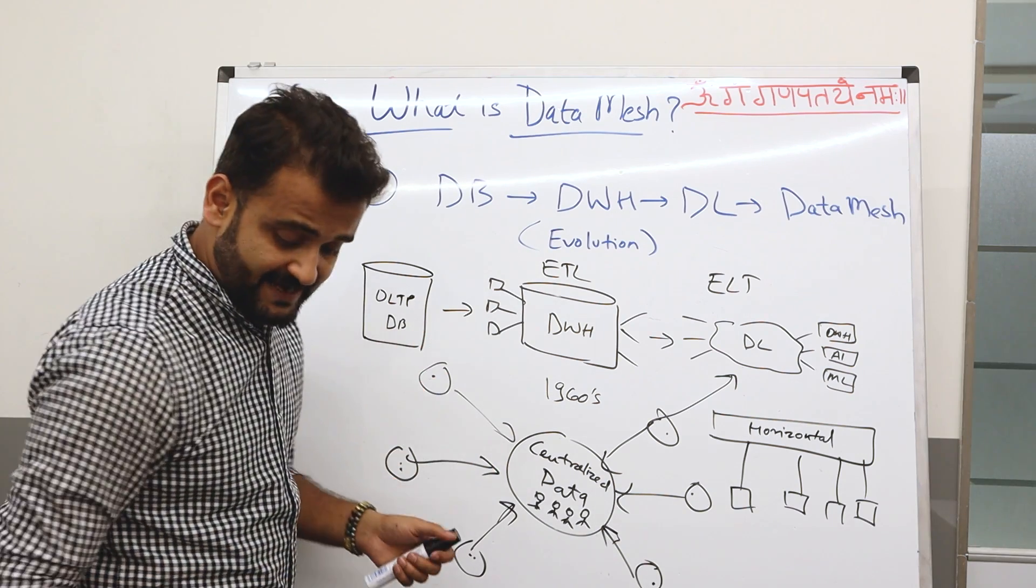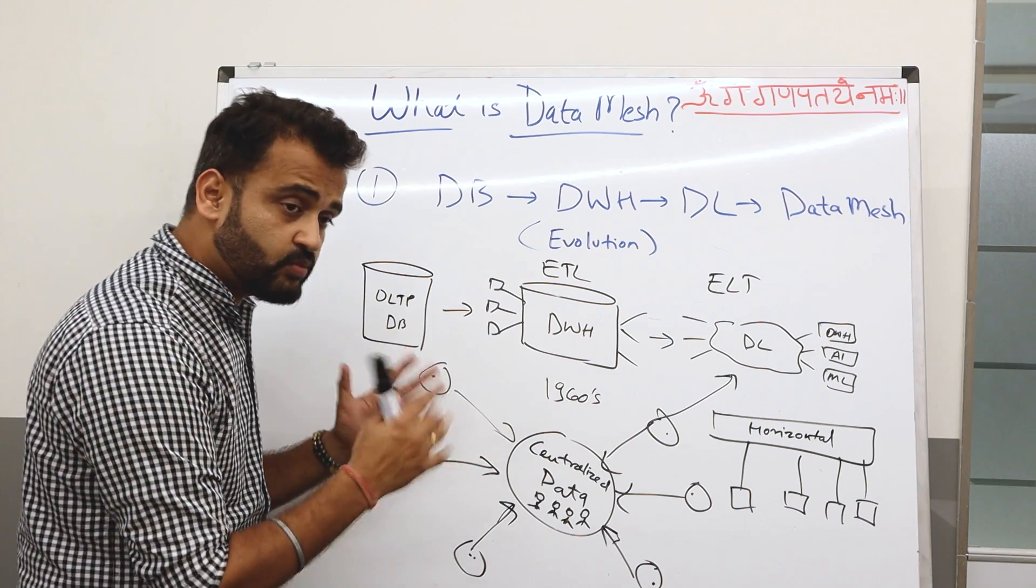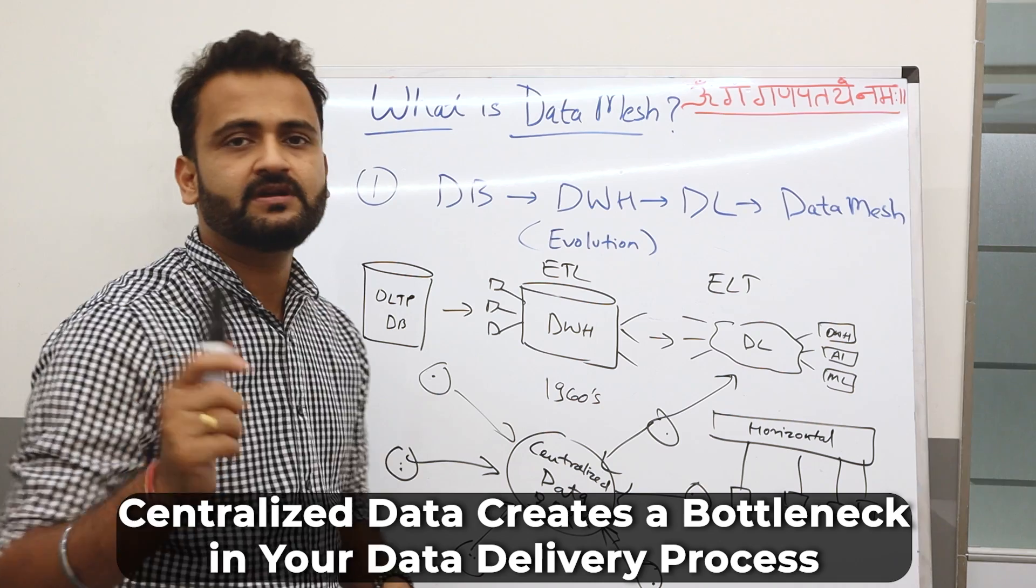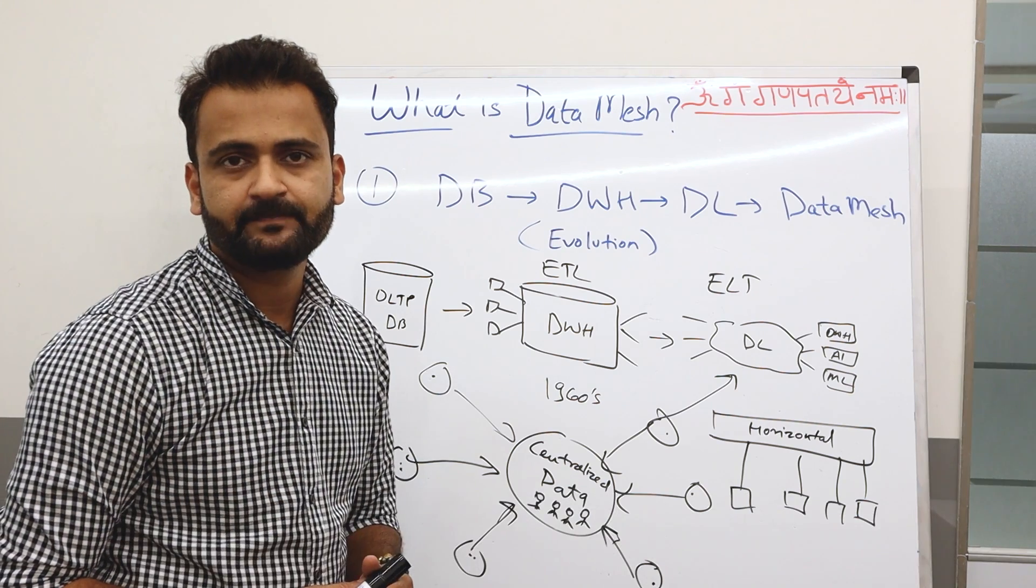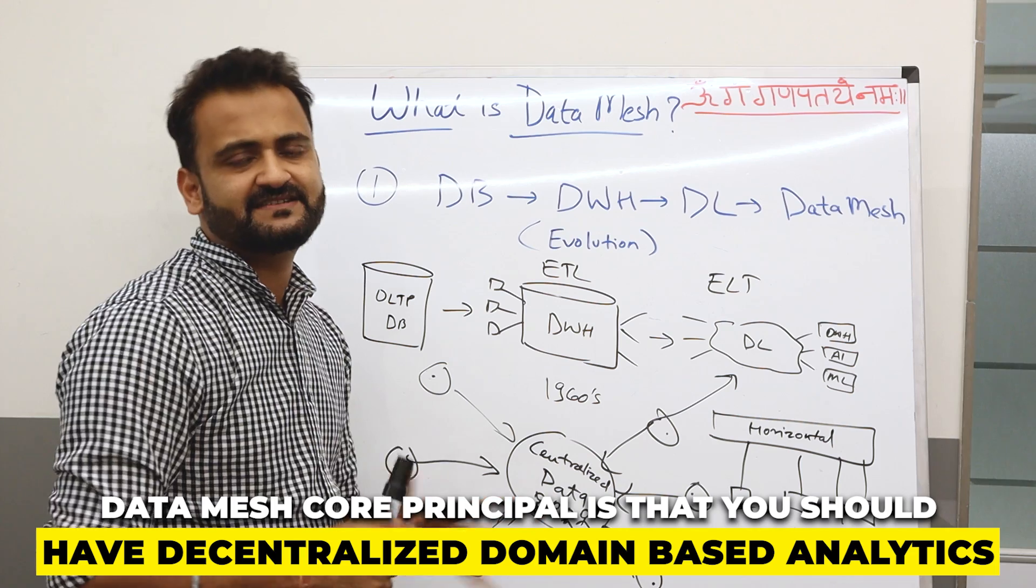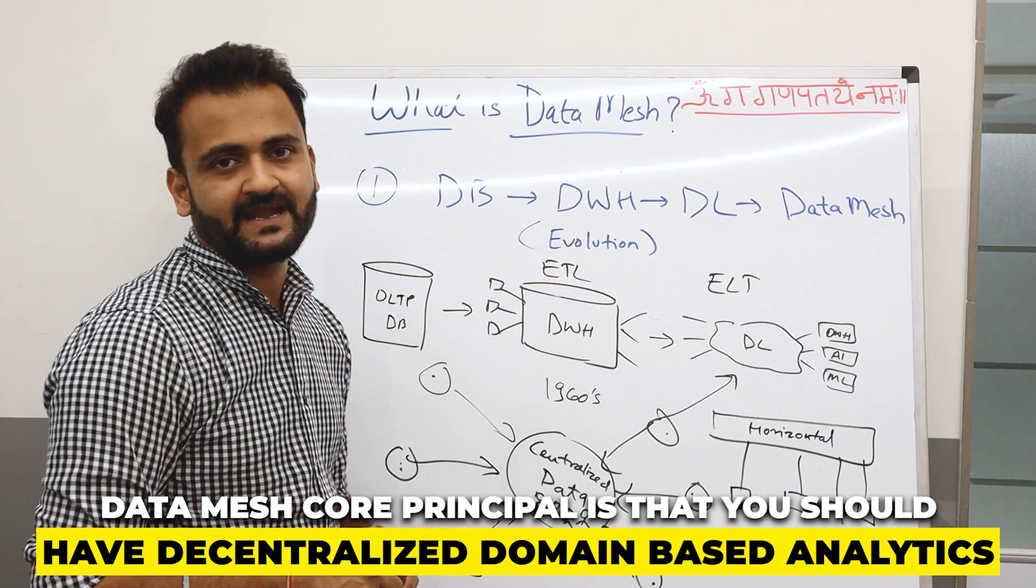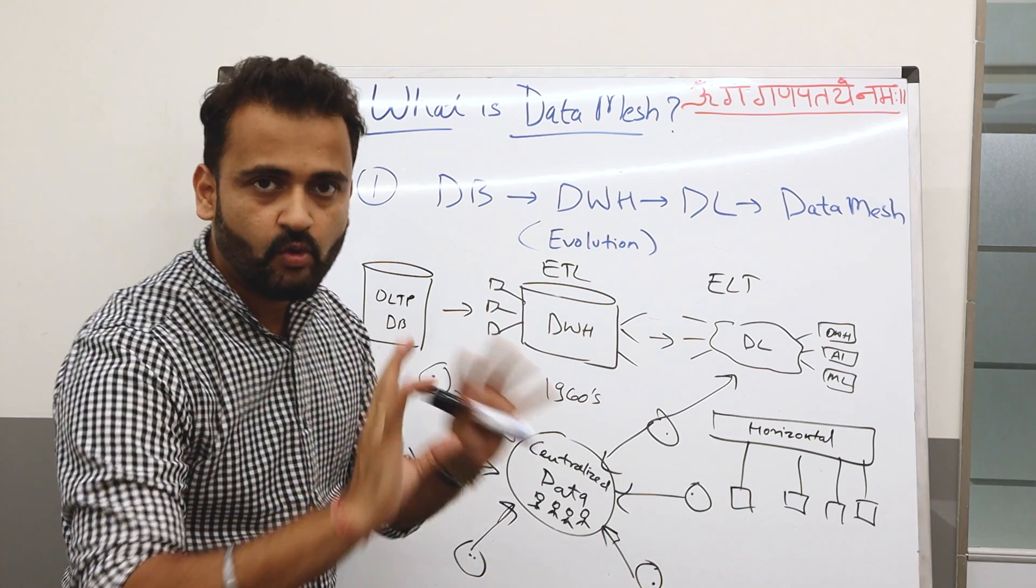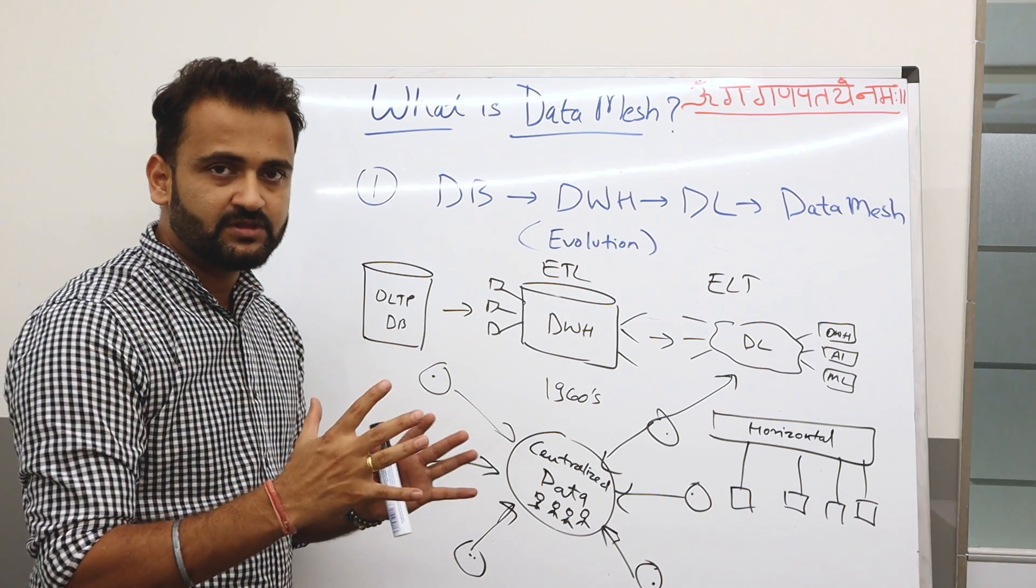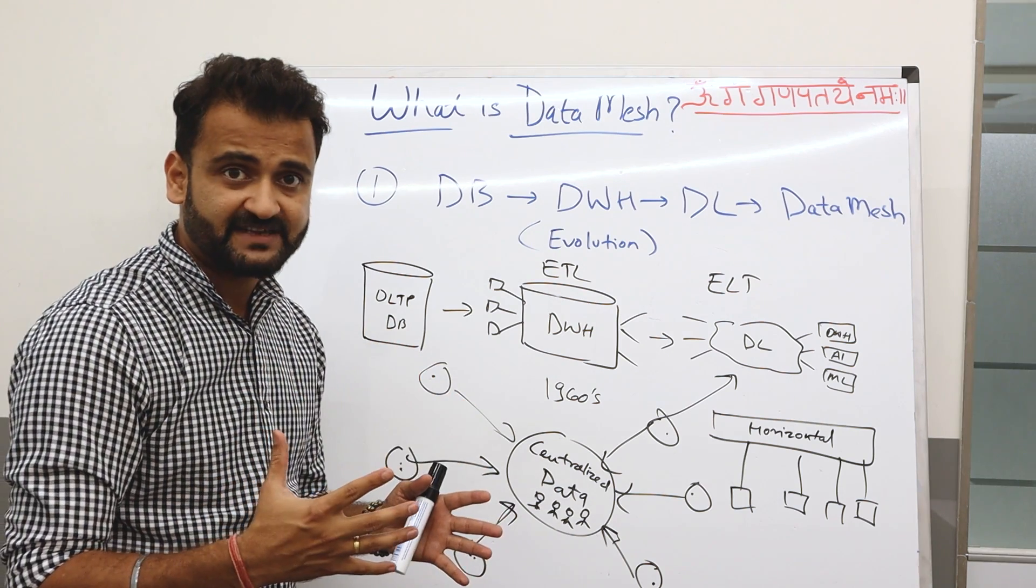So we'll understand that, but to understand that, what are the challenges? Challenge is this centralized data team creates a bottleneck in your whole data delivery. And Data Mesh says that you should have decentralized domain-based analytics, data analytics. That's their core principle. So now let's understand how this whole Data Mesh thing works by understanding its core principles and then the architecture.